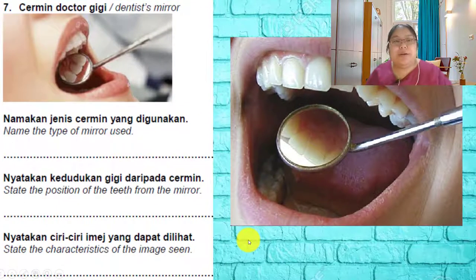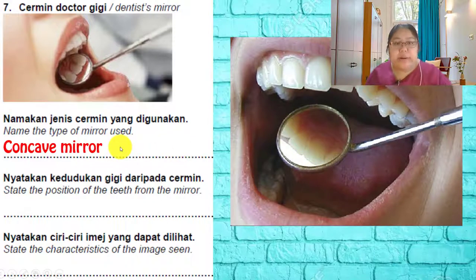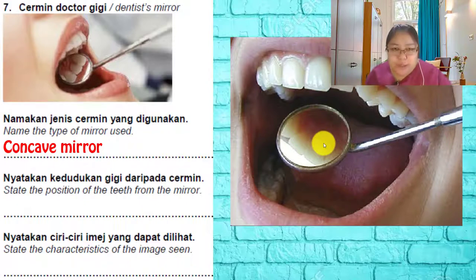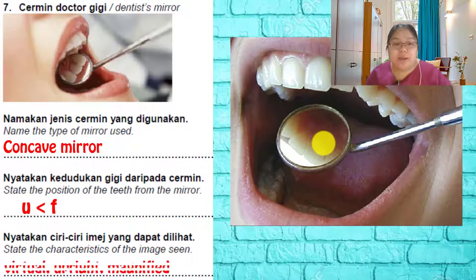Question seven is about the dentist mirror. It focuses on the tooth, making it appear bigger — so it is a concave mirror. The tooth must be placed at a distance less than the focal length (u less than f) to produce a virtual, upright, and magnified image. The characteristic of the image is virtual, upright, and magnified.